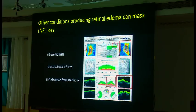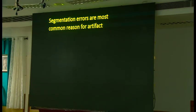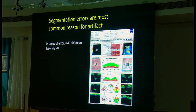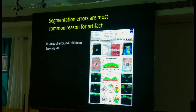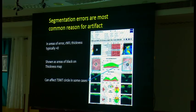Segmentation errors are the most common reason for artifact. The scan tries to determine where the retinal nerve fiber layer thickness is in the lower left and right areas, but with poor scan quality it can't distinguish those layers properly. Unfortunately in the Zeiss machine it's hard to identify segmentation errors because the picture is so small; other manufacturers show this in much greater detail. When segmentation fails, the most common error is that RNFL thickness is shown as zero, appearing as black on the color plot. This shows up as a very severe deviation on the deviation map.